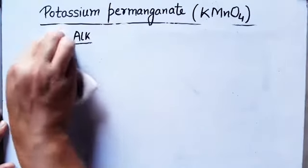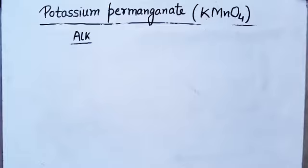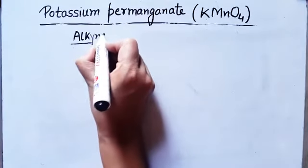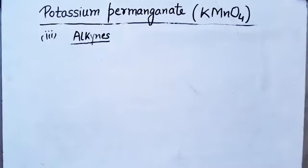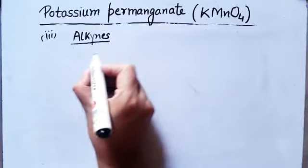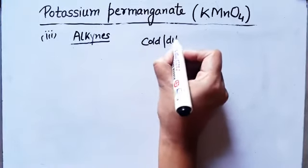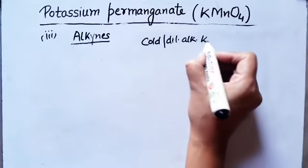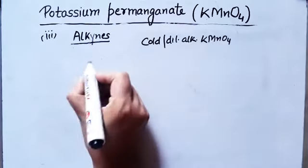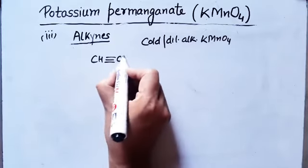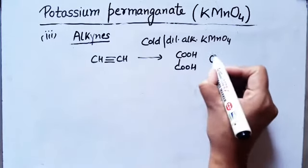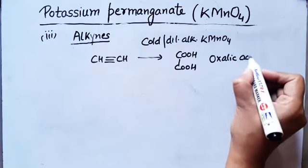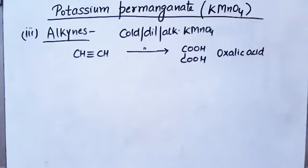Next is the reaction of KMnO₄ with alkynes. In the case of alkynes, if you use cold dilute alkaline KMnO₄ (Baeyer's reagent), then acids are formed — COOH, COOH — and oxalic acid is formed.